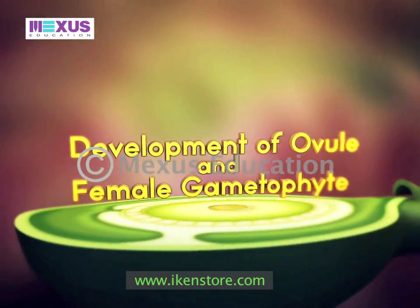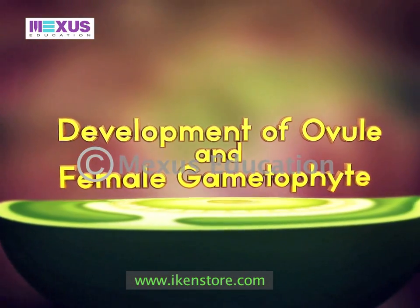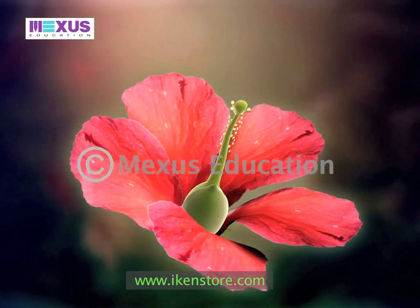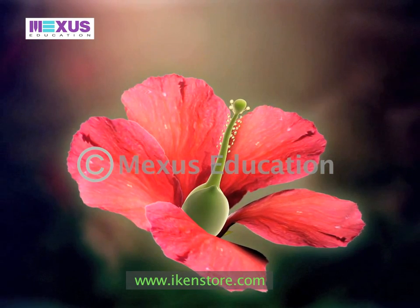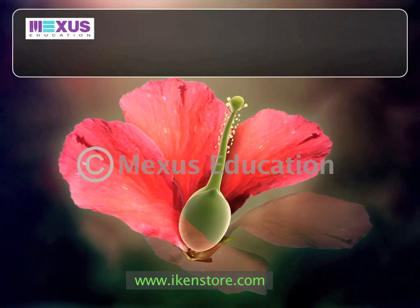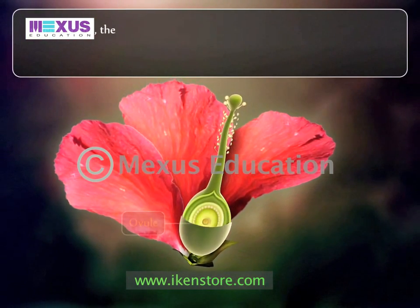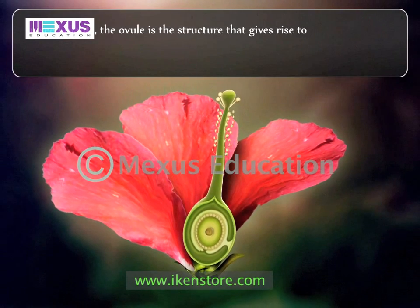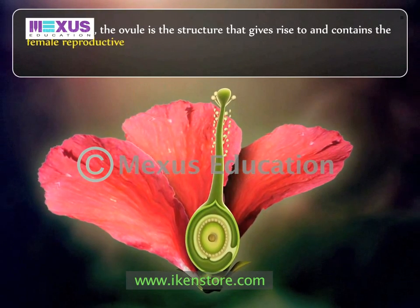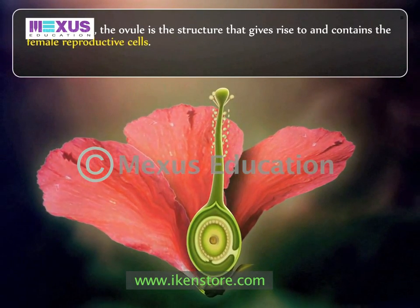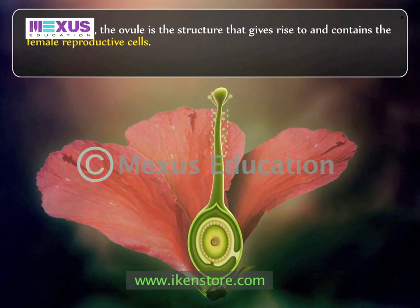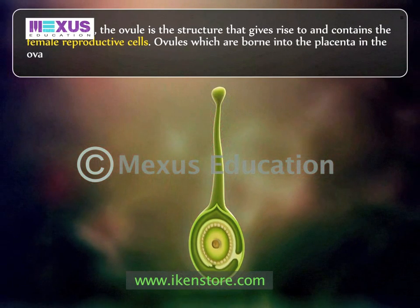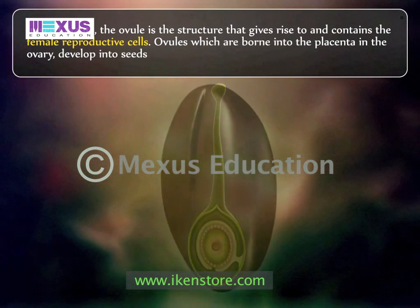Development of ovule and female gametophyte. Ovule means small egg. In seed plants, the ovule is a structure that gives rise to and contains the female reproductive cells. Ovules, which are borne on the placenta in the ovary, develop into seeds after fertilization.